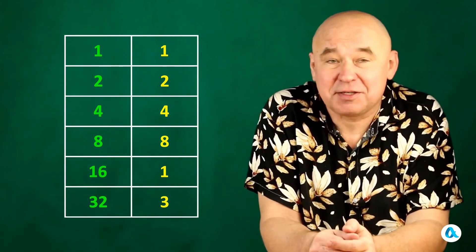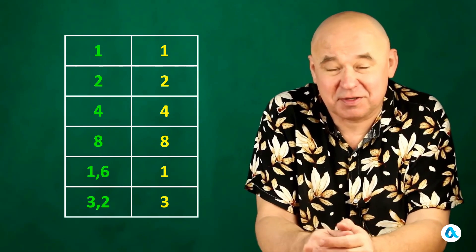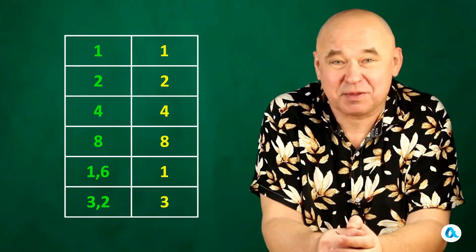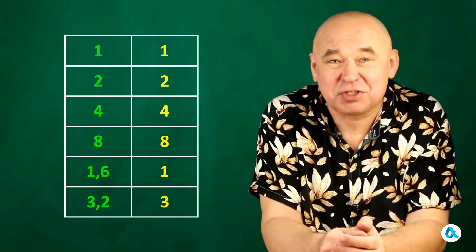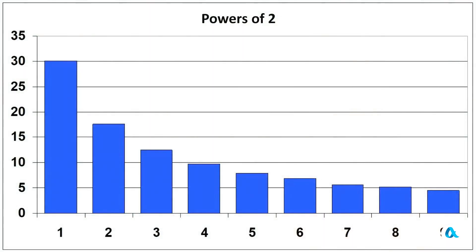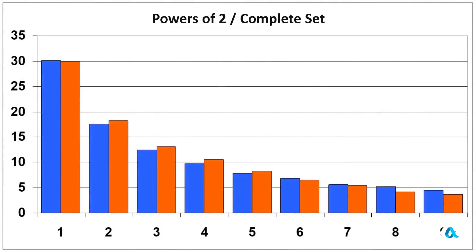In this way I'm going to count a whole thousand first digits of powers of two. This is pure mathematics, and the frequencies of the first significant digits consistently decrease from one to nine. Let's compare this result with the distribution in our consolidated geographic data set, and we see a remarkable match.